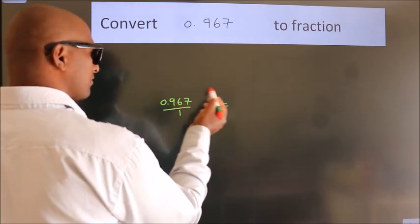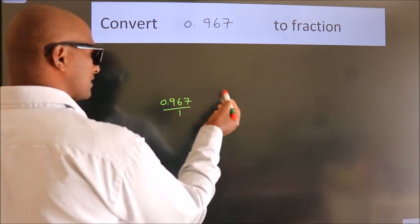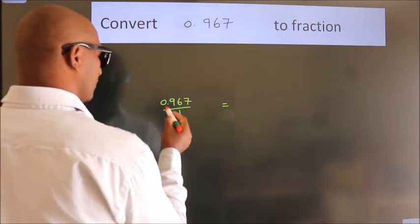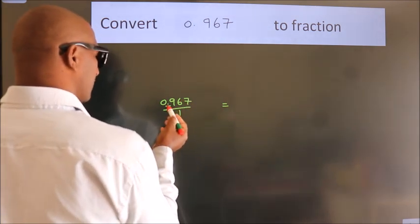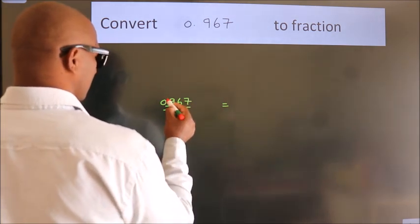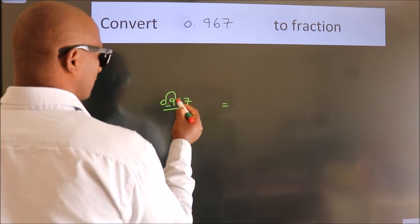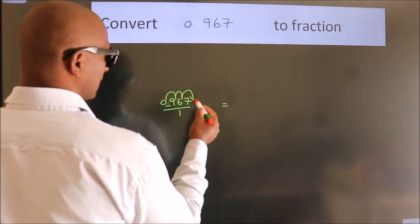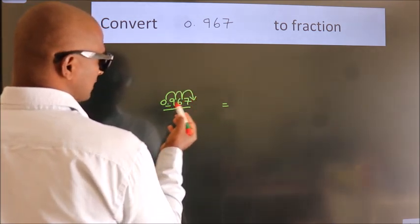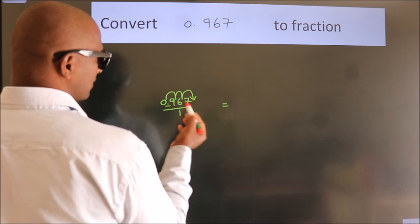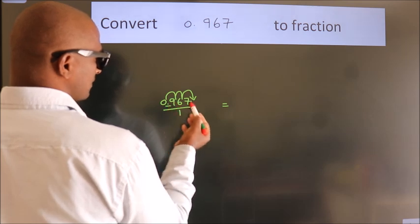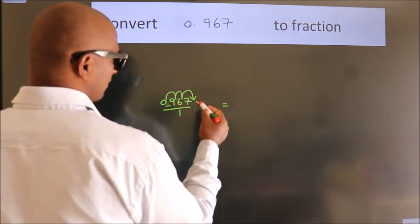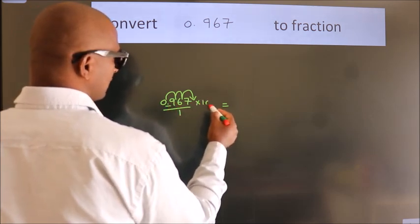To convert this to a fraction, we have to move this decimal after 1, 2, 3 numbers. To move this decimal after 3 numbers, we have to multiply it with 1000.